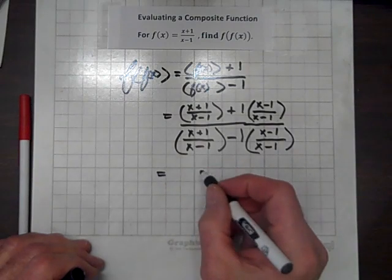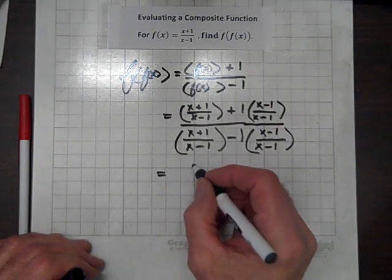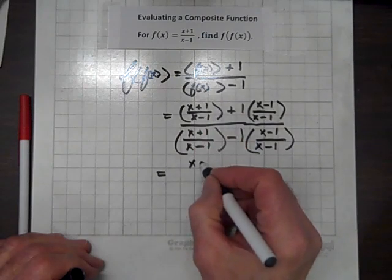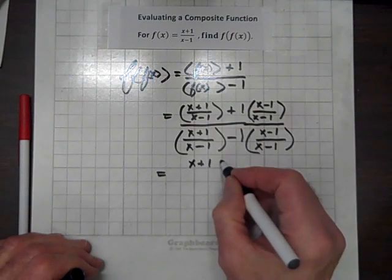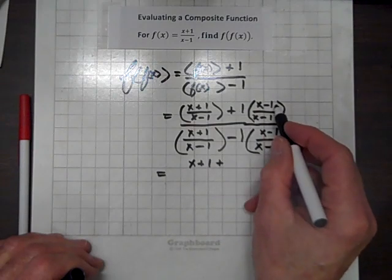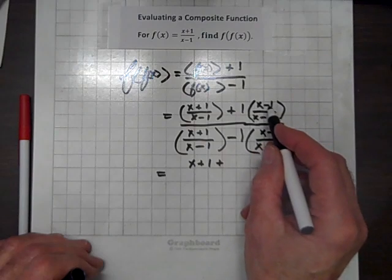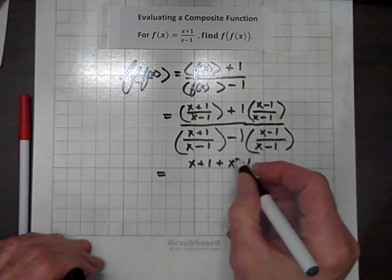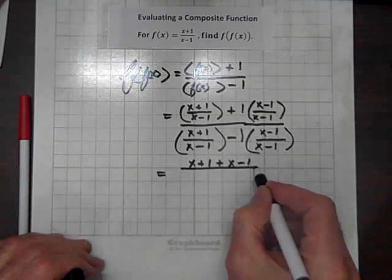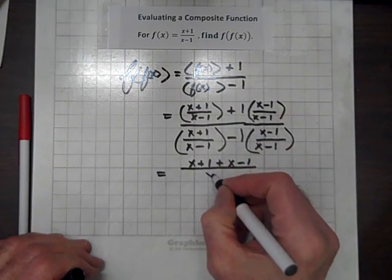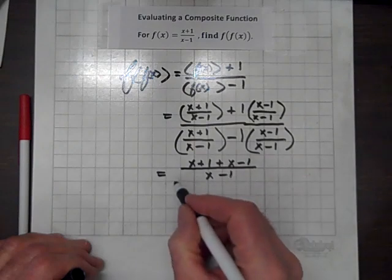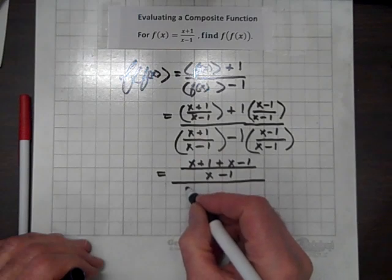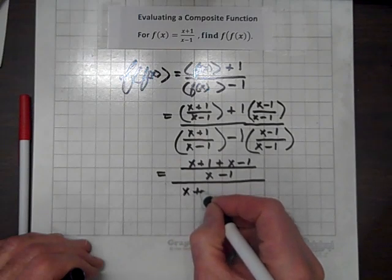We have a common denominator. So, upstairs we have, we can drop these parentheses, we have x plus 1 plus, and distributing this 1 through the quantity x minus 1. Downstairs we can drop these parentheses, and we get x plus 1.